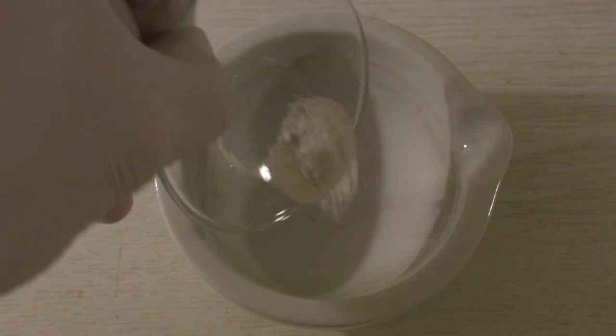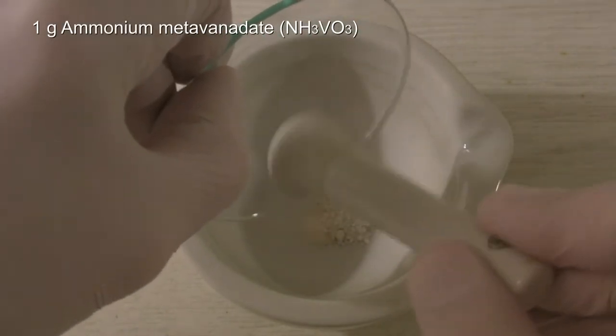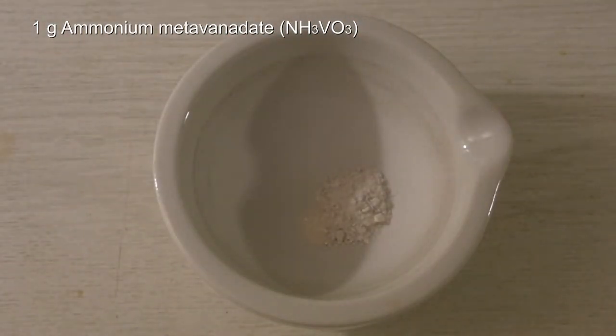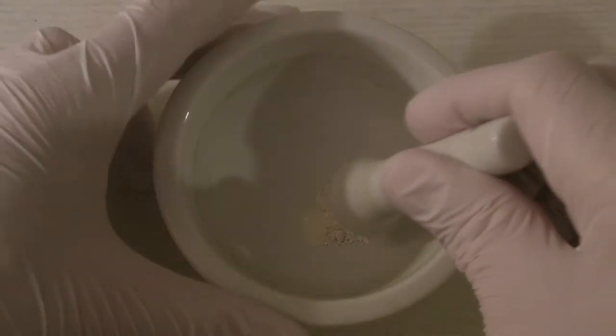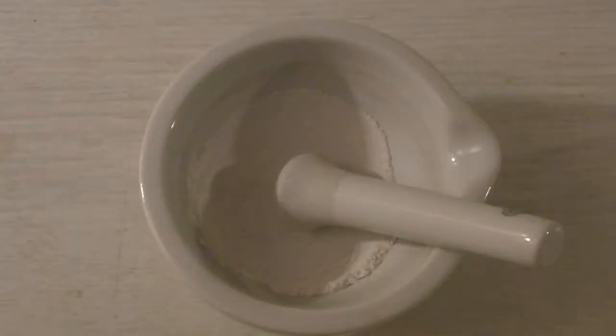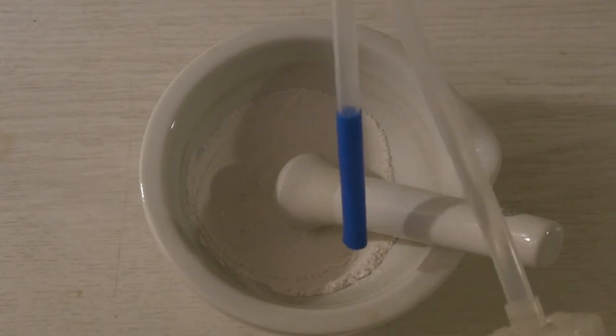For the experiment, one gram of ammonium metavanadate are added to a mortar and crushed to a fine powder. Then a small amount of water is added and it is crushed again.